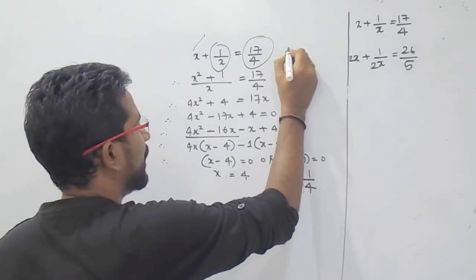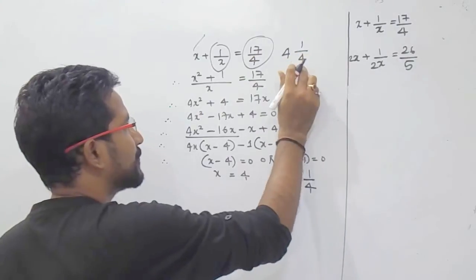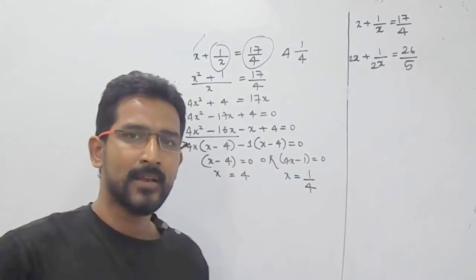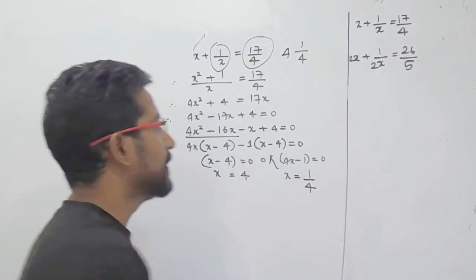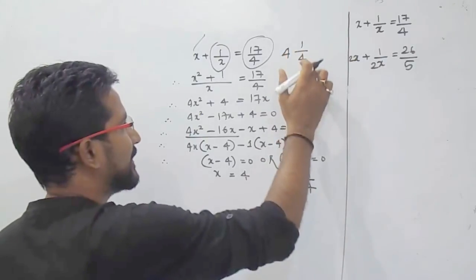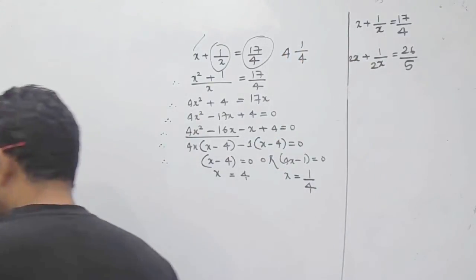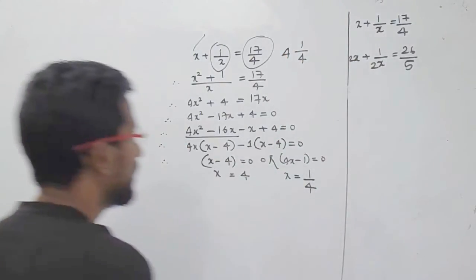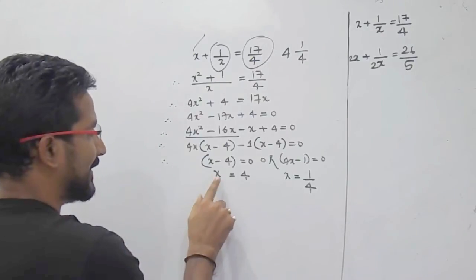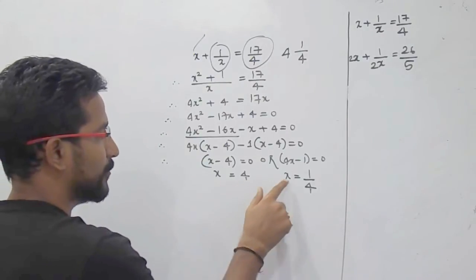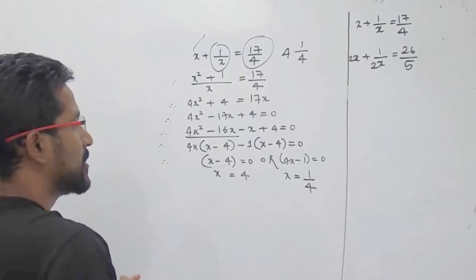If you convert 17 by 4 into a mixed fraction, it will be nothing but 4 and 1 by 4. That is 4 into 4 equals 16, plus 1 equals 17, over 4. So we are getting here x equals 4 and x equals 1 by 4. This is the normal method result.